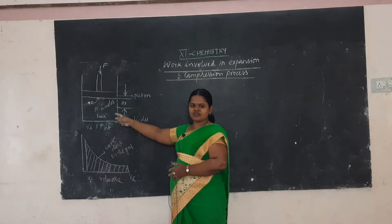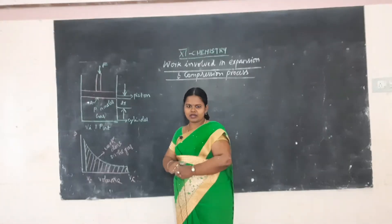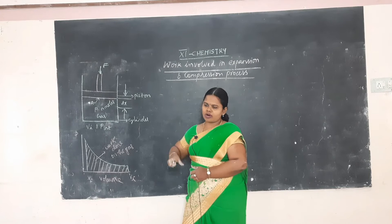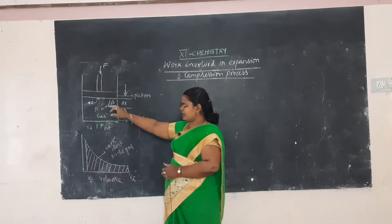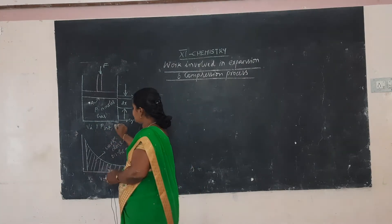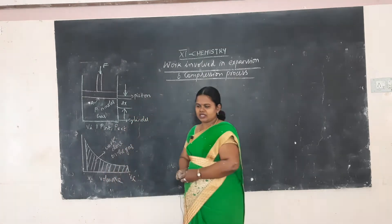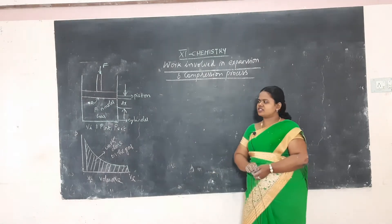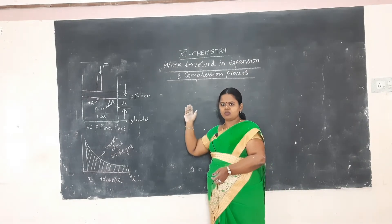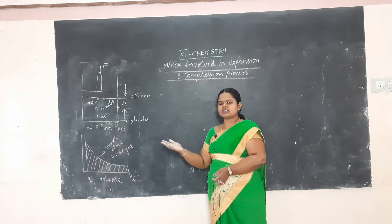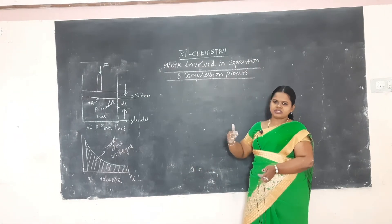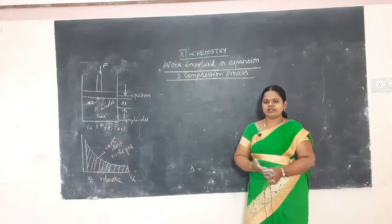We take a cylinder filled with n moles of ideal gas, fitted with a frictionless piston with cross-sectional area A. The initial volume of the gas is V_i, the internal pressure is P_int, and the external pressure is P_ext. When you compress the gas — when you move the piston inwards — the external pressure will be more than the internal pressure.